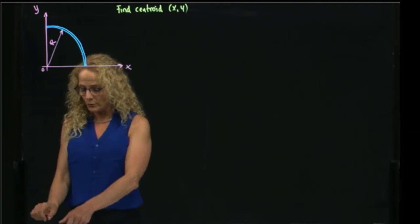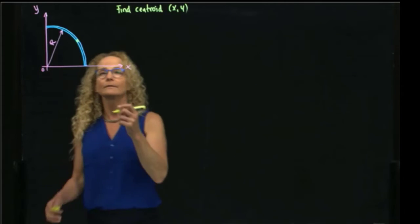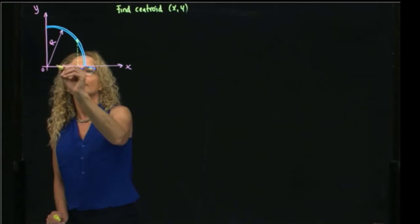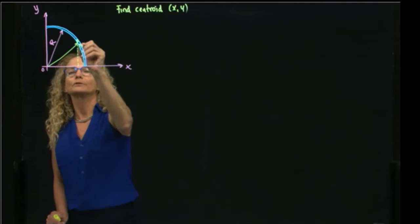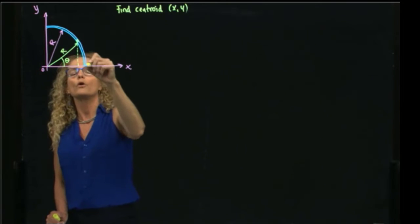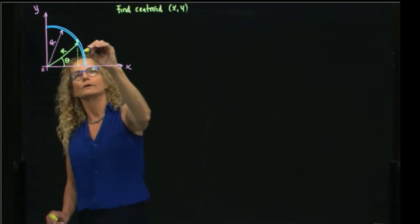So the first thing that we will do is find a differential of line and find the coordinates for a general position theta. As you see, this is R, because all the material of this figure is in this line over here.